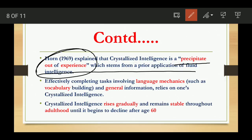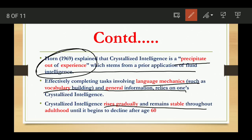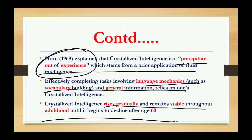As you gain more experience, your vocabulary increases, your knowledge increases, and you are able to recall information. It includes all language mechanics like vocabulary building, and general information like who was the first Prime Minister or first President of our country. Crystallized Intelligence gradually rises and remains stable throughout adulthood, declining only after 60 years of age — because its main component is knowledge gained from experience.